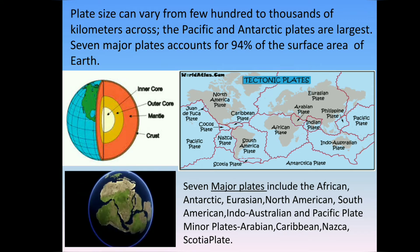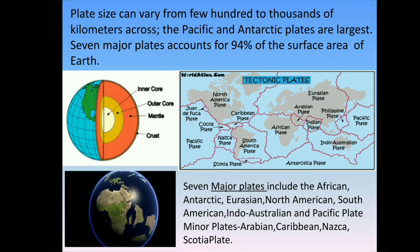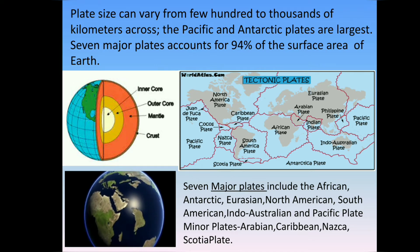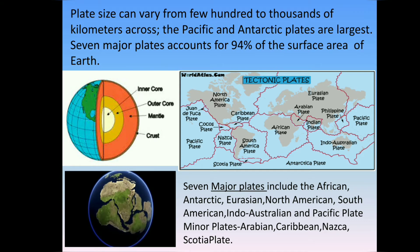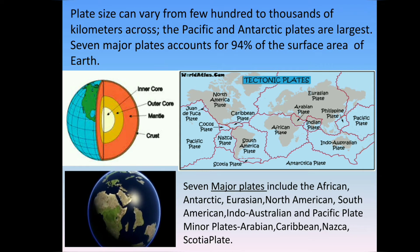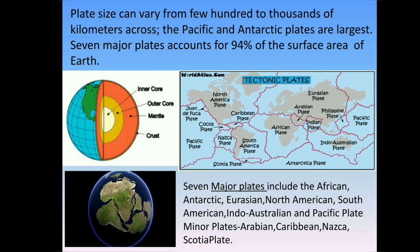The seven major plates include the African, Antarctic, Eurasian, North American, South American, Indo-Australian and Pacific plates. Minor plates include the Arabian, Caribbean, Nazca and Scotia plates.